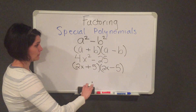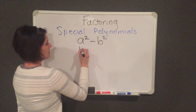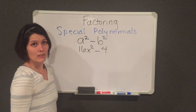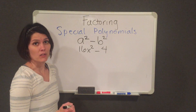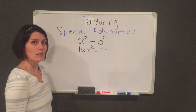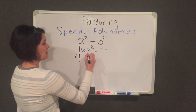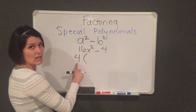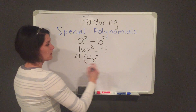Let's do one more example. Let's look at 16x squared minus 4. This example is a little bit harder because it has a greatest common factor. So first you always want to factor out the greatest common factor first. The greatest common factor between 16 and 4 is going to be 4, so I'm actually going to take out a 4 before I do anything else. I write the 4 in the front, and then divide it out to get my remaining terms. So 16 divided by 4 is 4, and 4 divided by 4 is 1.